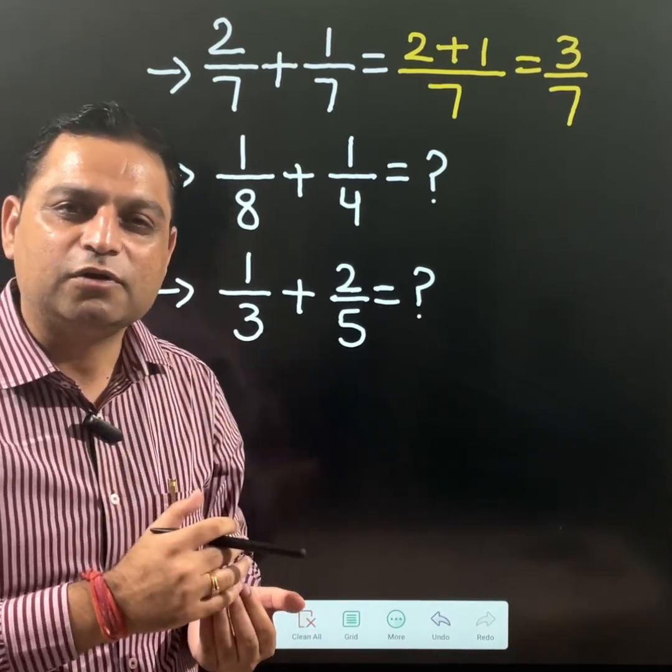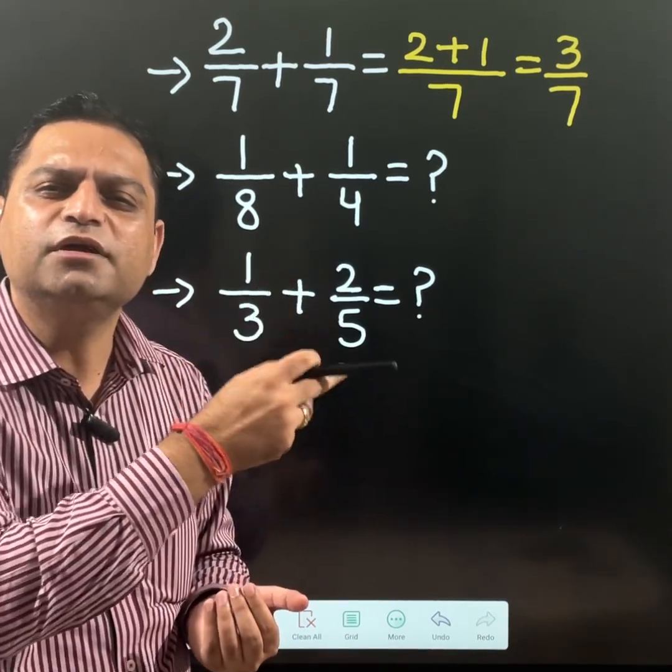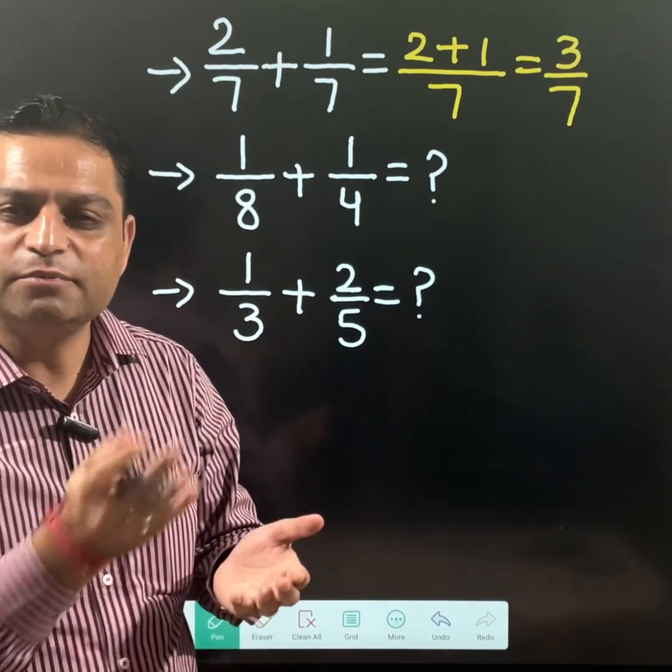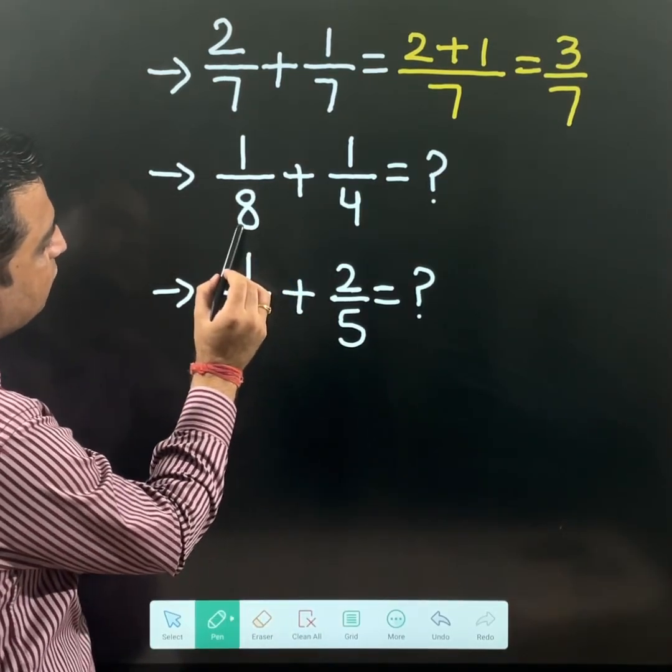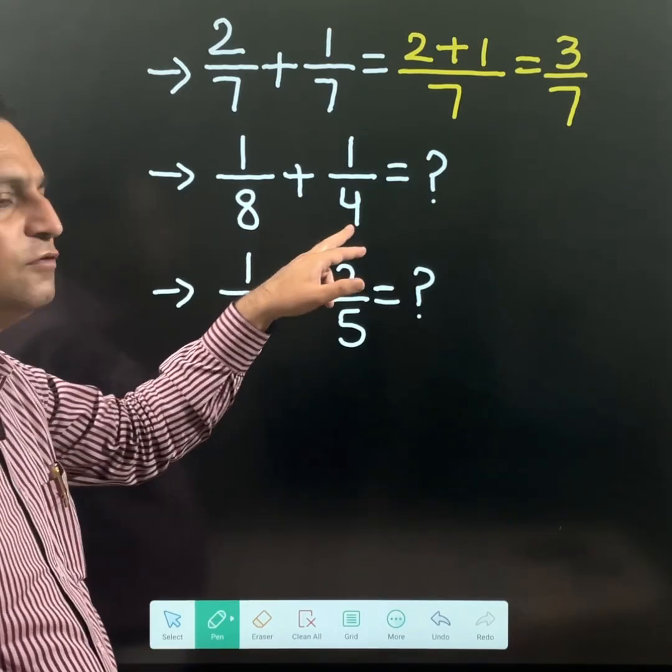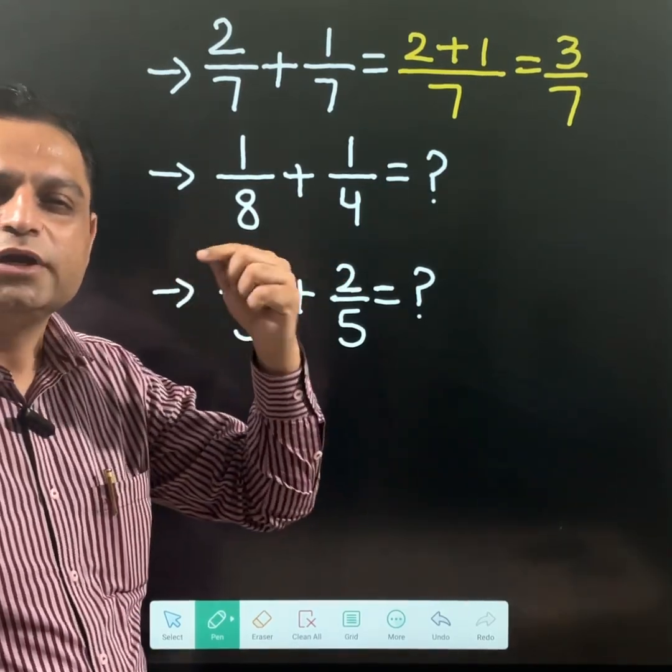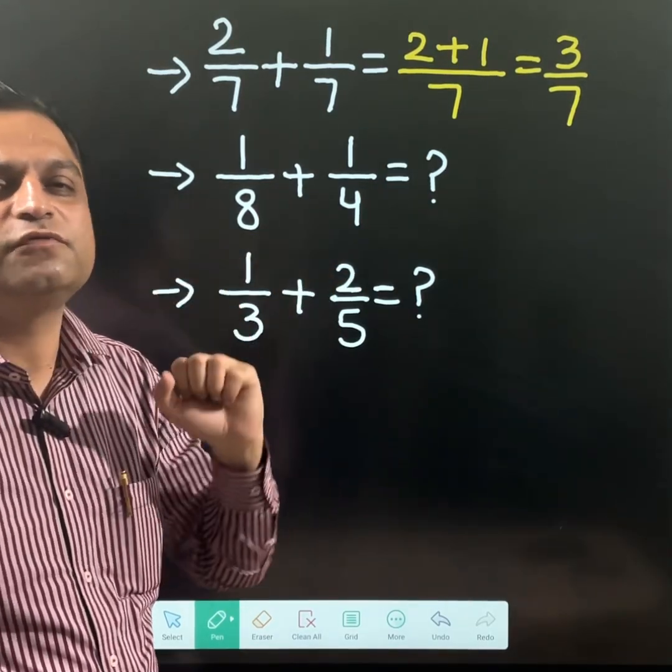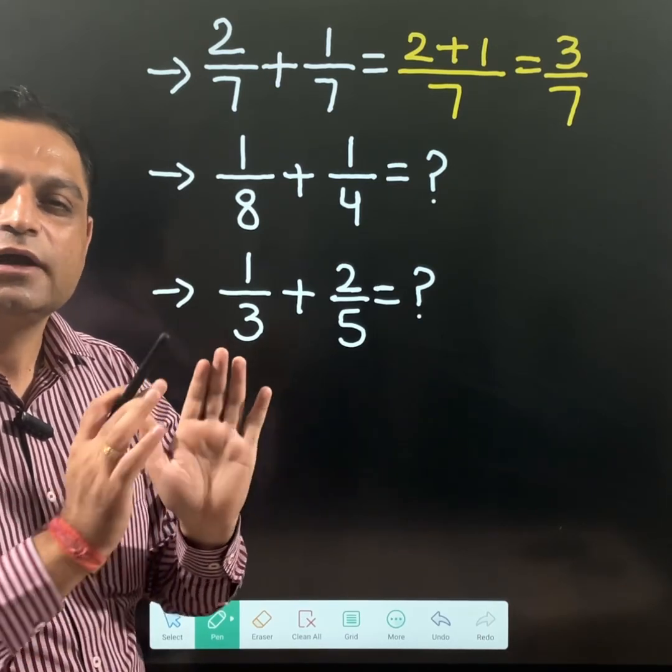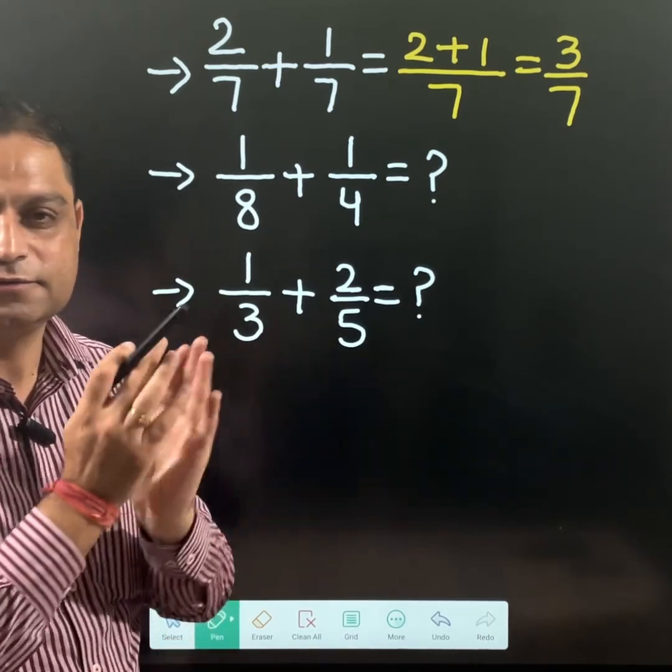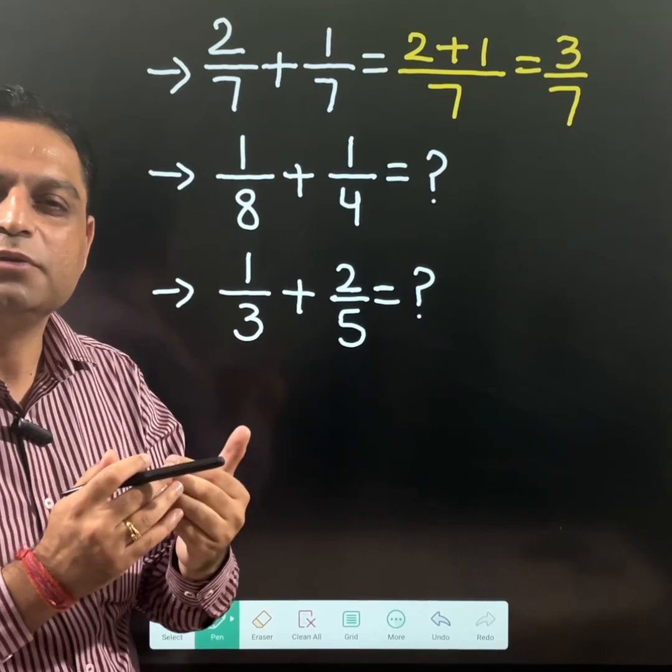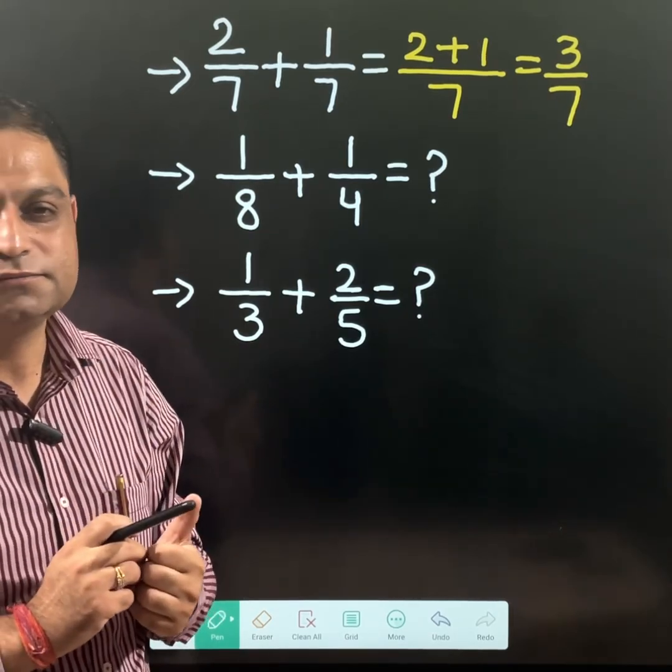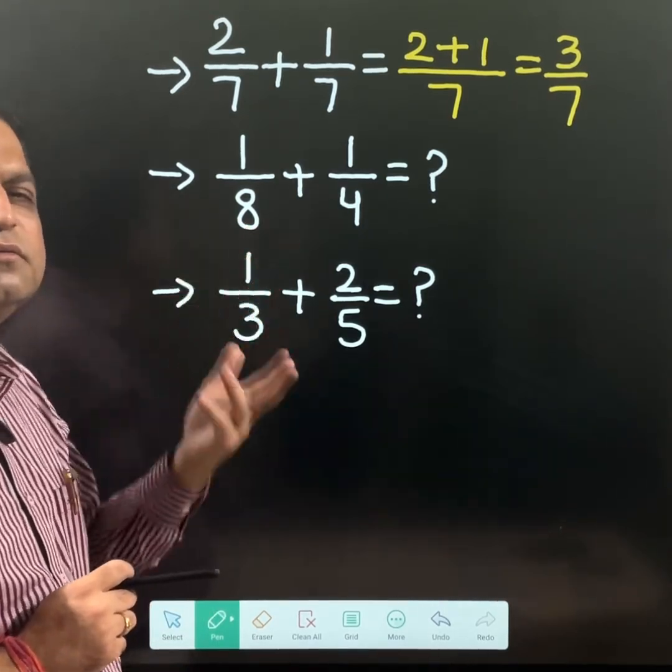If I am having the problem that the denominator is not the same, then why can't we make it the same? Let's suppose this is 8 and this is 4. According to the rule, you should take the LCM of 8 and 4 first, and the LCM of 8 and 4 is 8. So we are going to make the denominator 8 here.